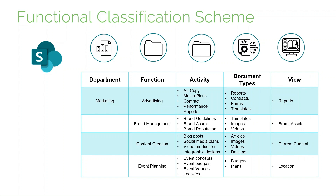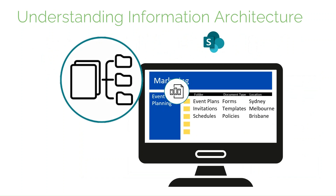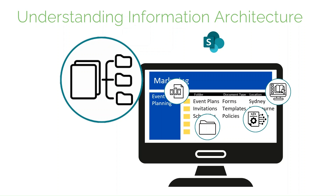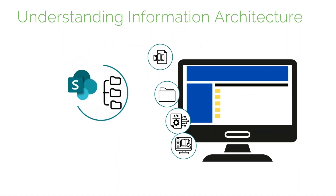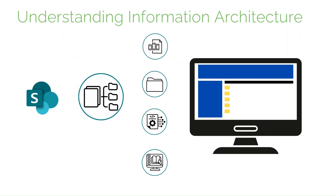So in SharePoint, we can set up libraries or folders for each major function, and then within these libraries we create folders and/or metadata to further organise documents. Libraries are the containers for storing documents and other files. Folders group related documents within libraries. Metadata is descriptive information that helps in categorising and finding documents — crucial for enhancing searchability and organisation. And views allow us to present the information in a way that suits our needs. Designing a functional classification scheme and setting up libraries, folders, metadata and views can significantly improve efficiency and access to information.